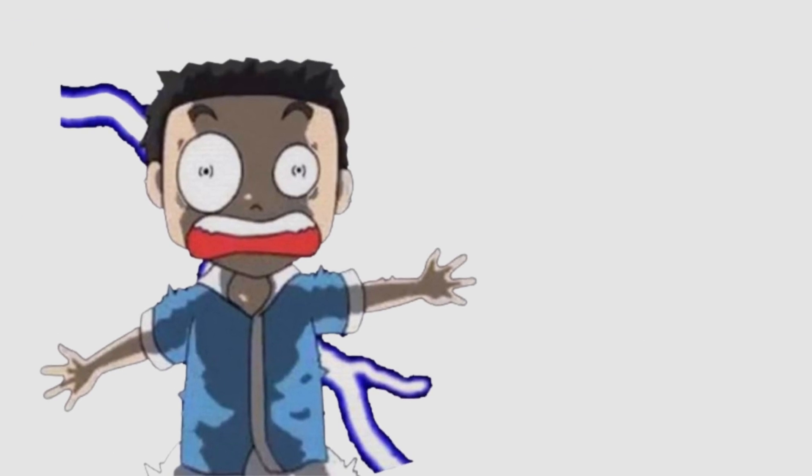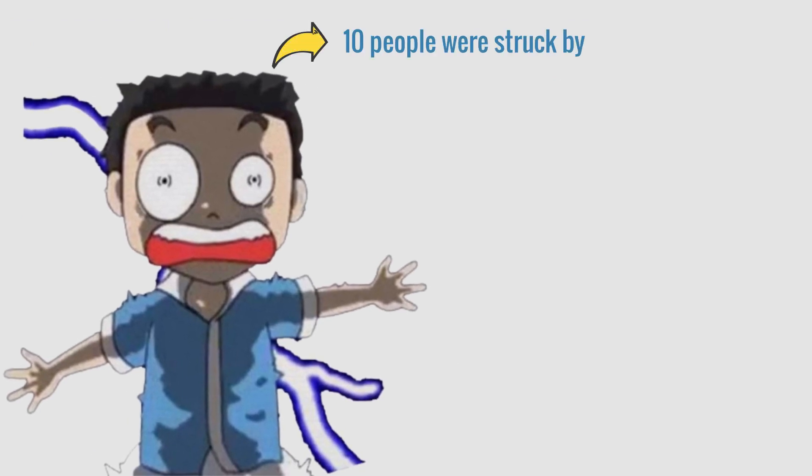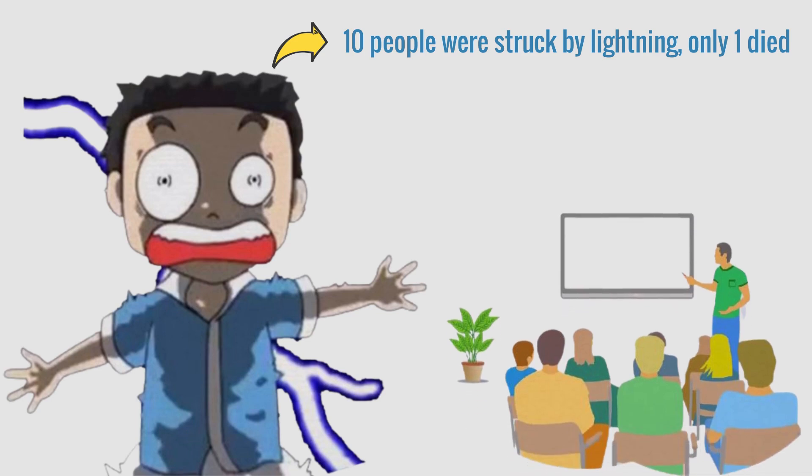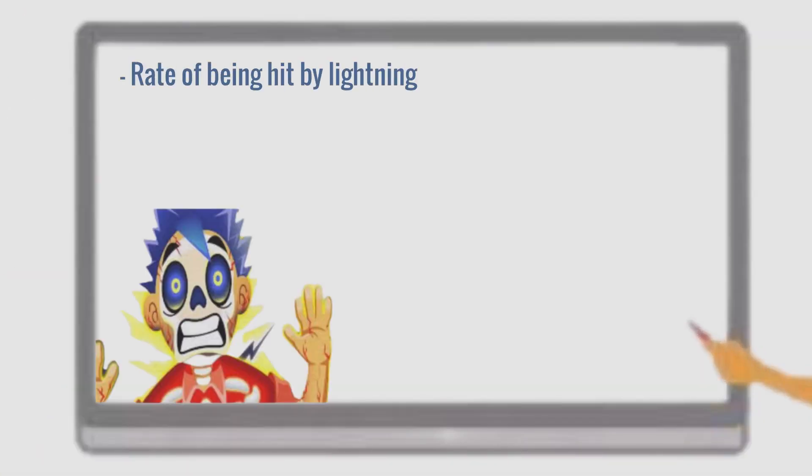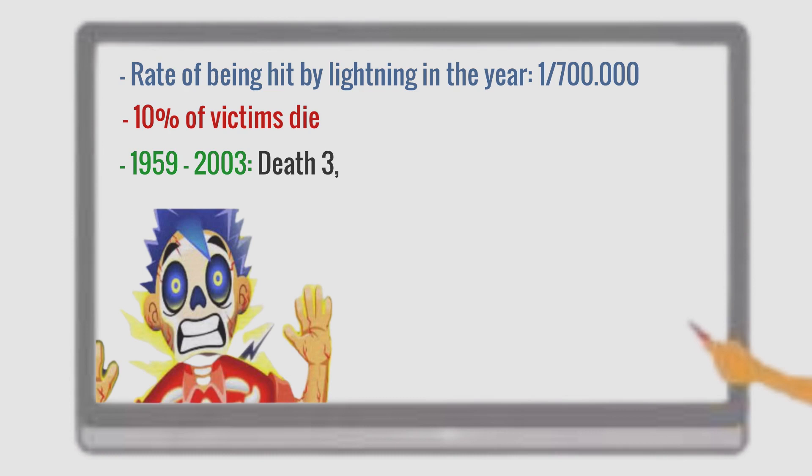At first, you may be surprised to learn that despite such a strong current, statistics show that only 1 in 10 people who are struck by lightning will die. According to the National Oceanic and Atmospheric Administration, the odds of being struck by lightning in a given year are 1 in 700,000. About 10% of victims will be fatal. Lightning has killed nearly 3,696 Americans between 1959 and 2003, out of a total of 40,000 people who were struck by lightning.